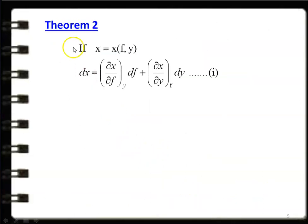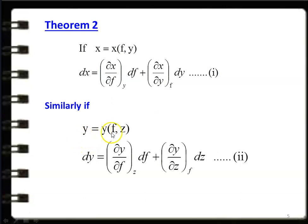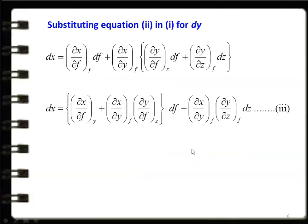Theorem 2. If x is a function of f and y, where f and y are independent variables and x is the dependent variable, then: dx = (∂x/∂f) at constant y · df + (∂x/∂y) at constant f · dy. Similarly, if y is a function of f and z, then: dy = (∂y/∂f) at constant z · df + (∂y/∂z) at constant f · dz. So x is a function of f and y, and y is a function of f and z — there are four variables involved: x, y, z, and f. Then substitute equation 2 into equation 1.